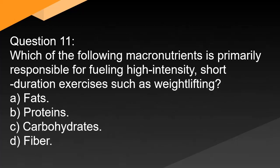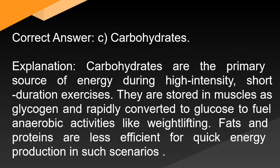Question 11: Which of the following macronutrients is primarily responsible for fueling high-intensity, short-duration exercises such as weight lifting? A. Fats. B. Proteins. C. Carbohydrates. D. Fiber. Correct answer: C. Carbohydrates. Carbohydrates are the primary source of energy during high-intensity, short-duration exercises. They are stored in muscles as glycogen and rapidly converted to glucose to fuel anaerobic activities like weight lifting. Fats and proteins are less efficient for quick energy production in such scenarios.